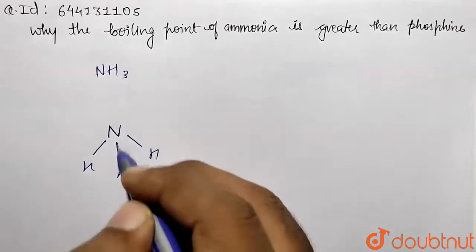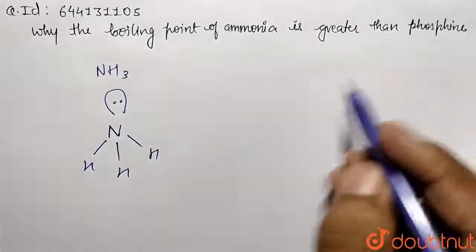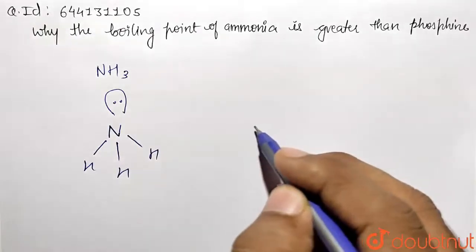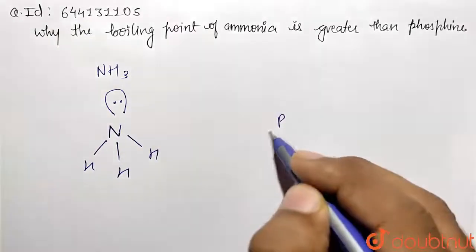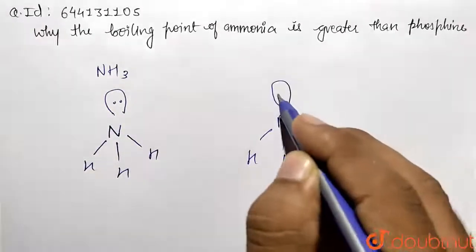Which are being represented with NH, NH, NH, and there is one lone pair present. Similarly, phosphine is basically PH3 molecule, so P-H-H-H, and it is also having one lone pair.